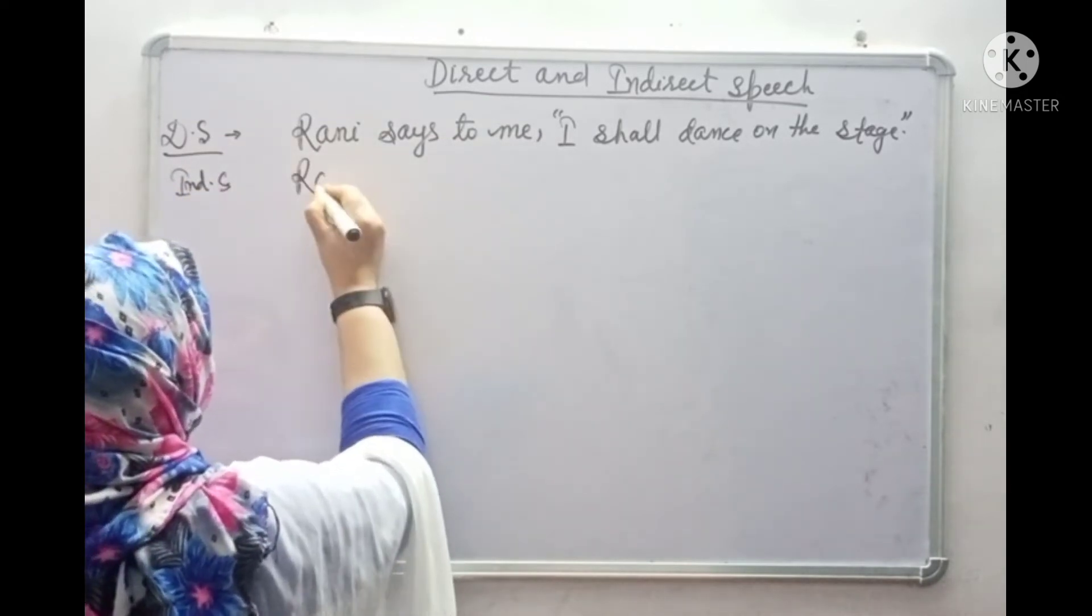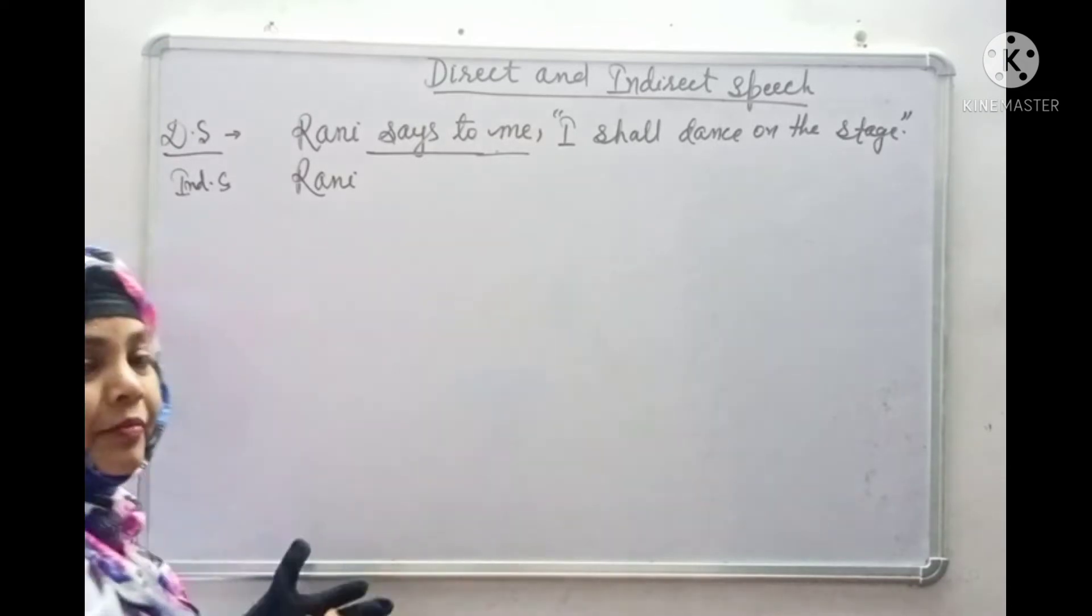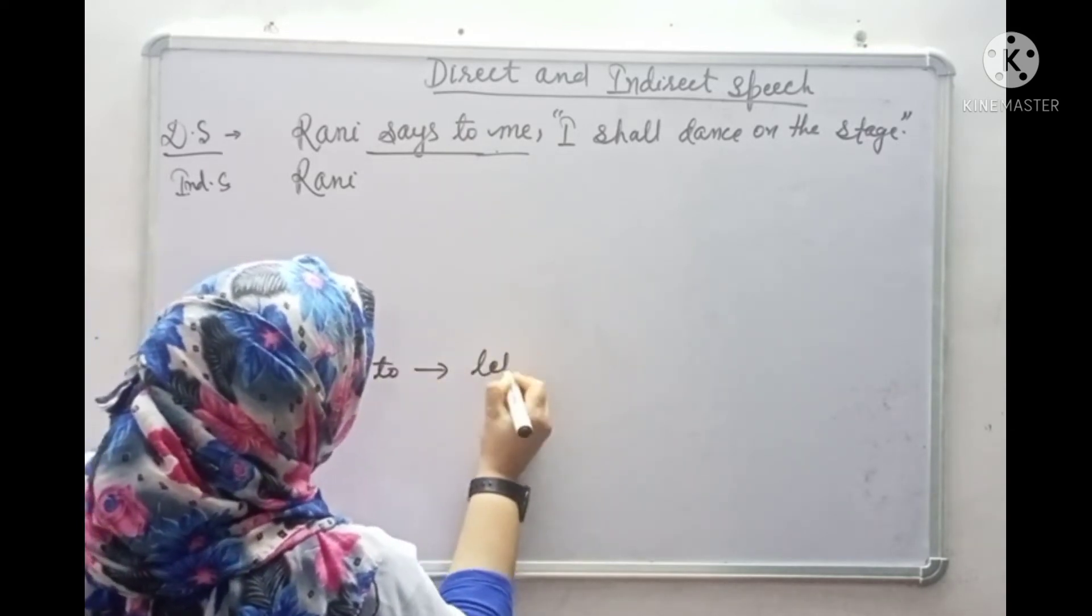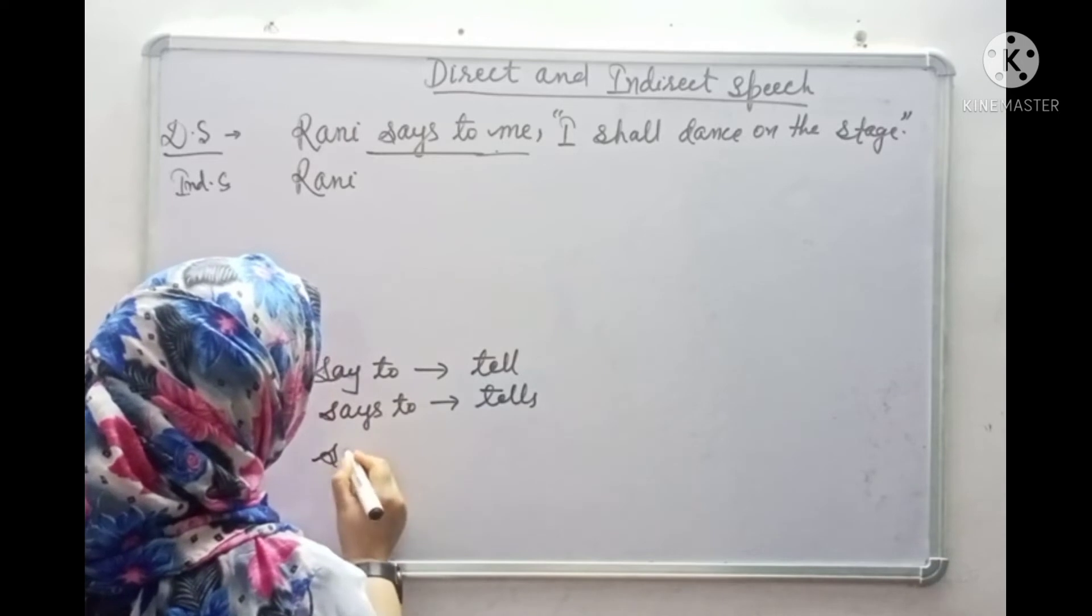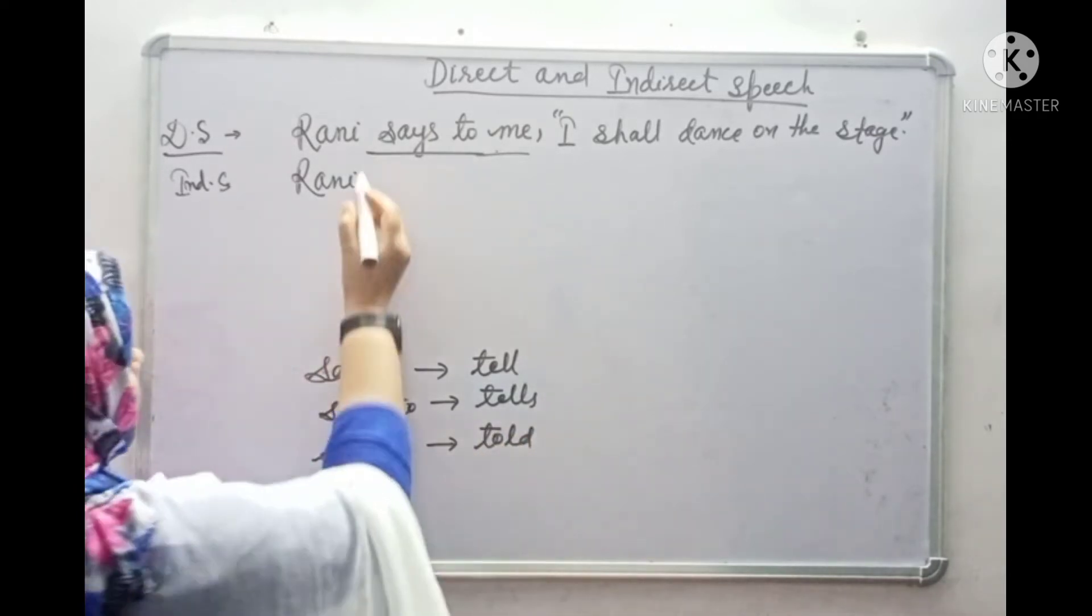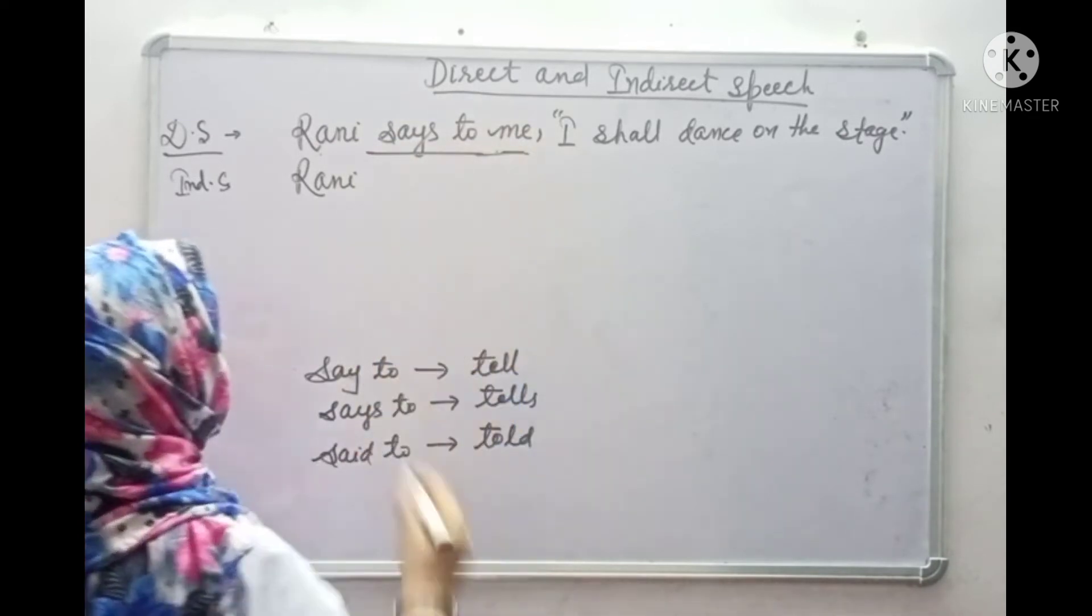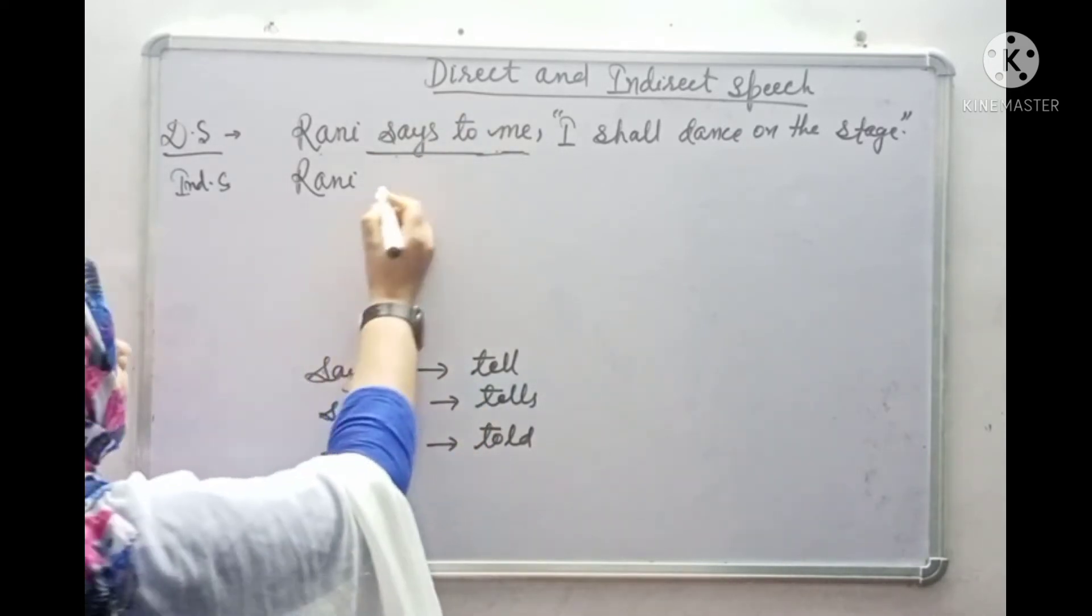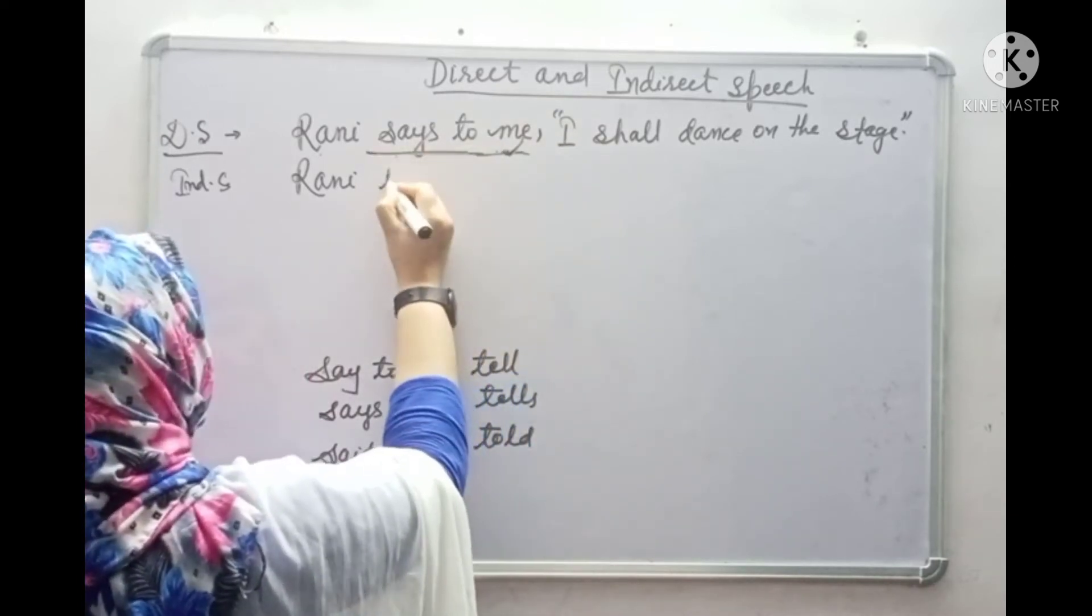Here, Rani says to. How do we convert? Says to becomes tells. Say to becomes tell. Said to becomes told. Understood? Just look here. If at the end of the sentence there is an object, then says becomes tells or said becomes told. Here it's Rani says to me, so we will write Rani tells me. Because here is object.